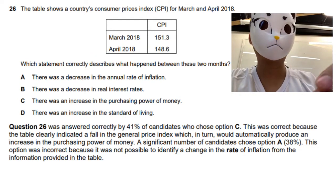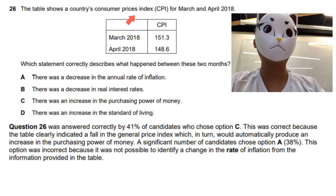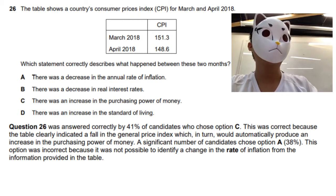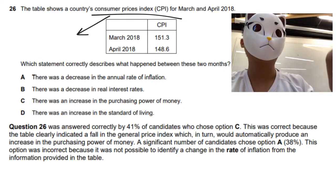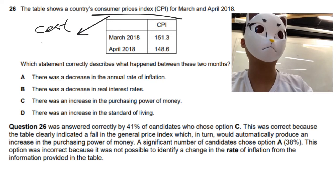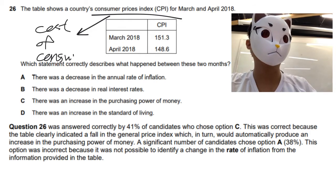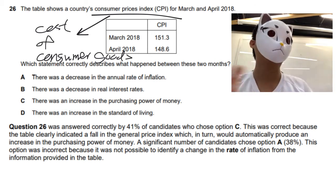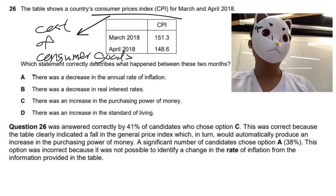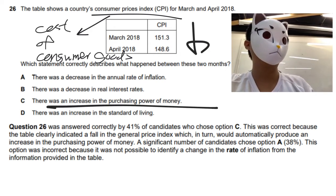This question tests students' ability to understand the meaning of the Consumer Price Index. The Consumer Price Index is an index to reflect the cost of buying consumer goods — the price level of consumer goods only, not producer goods. There is a drop, so the cost of consumer goods drops, and option C is the answer.